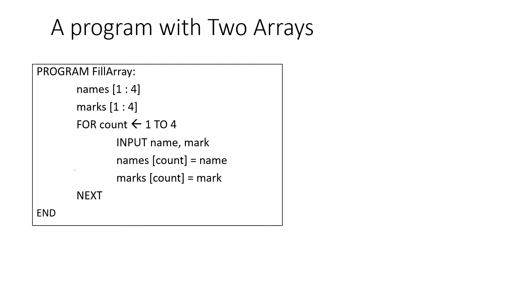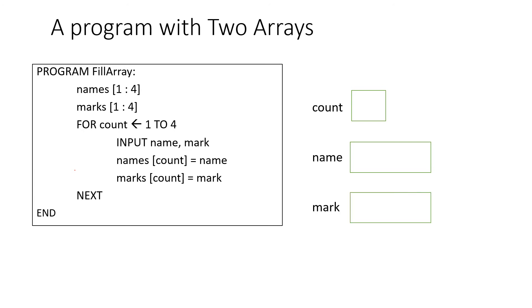What if you have a program with two arrays? Here we've got program FillArray with names[1:4] and marks[1:4]. For count = 1 to 4, we input name and mark, then names[count] = name and marks[count] = mark, so we have two arrays operating concurrently.